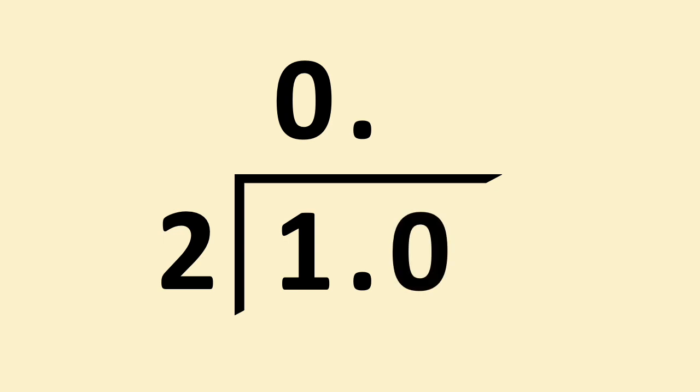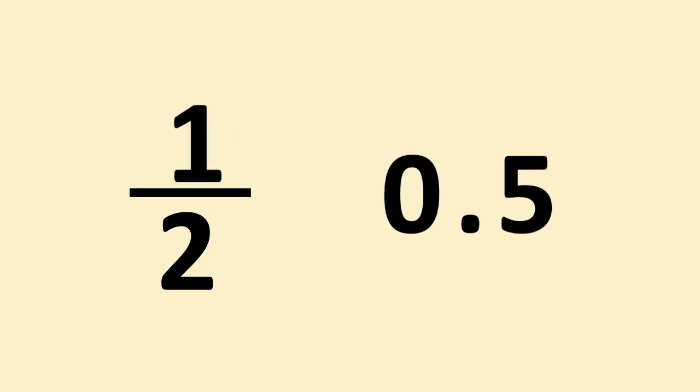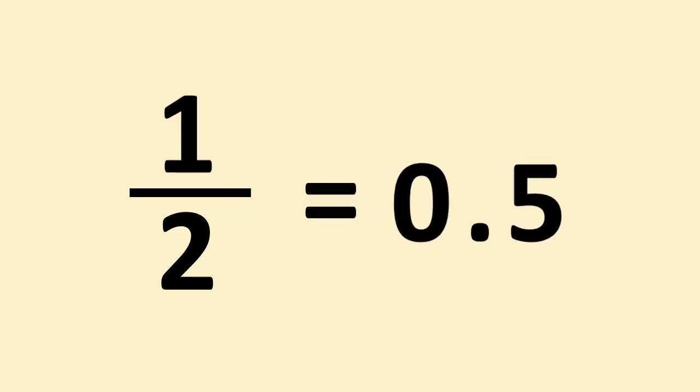Now we have somewhere to carry our one. How many twos go into ten? Five. So the answer is, one half is equal to 0.5.